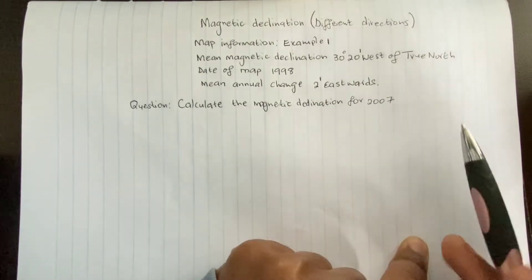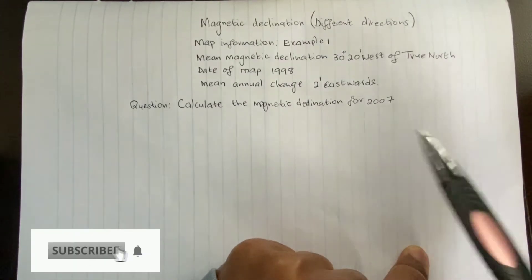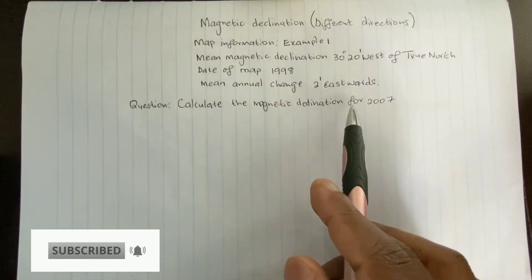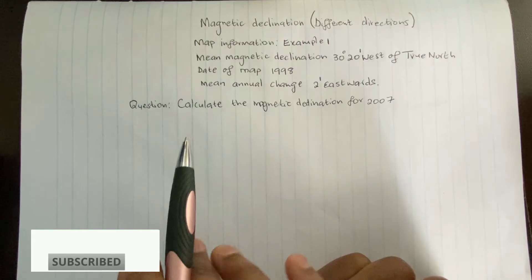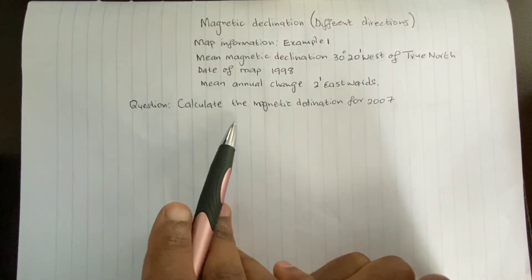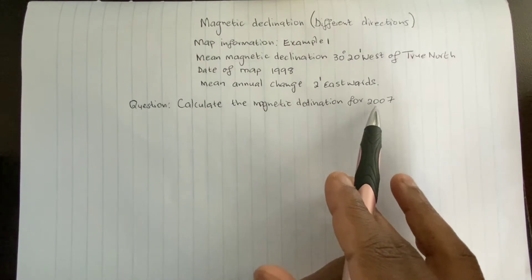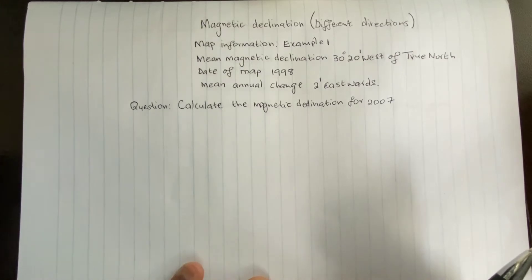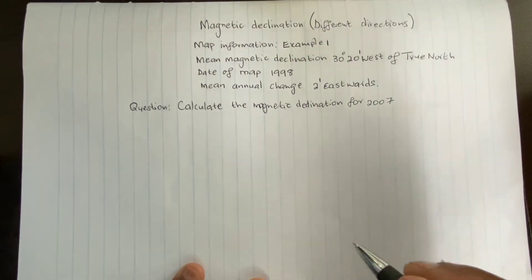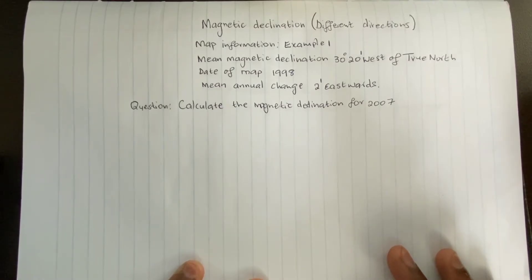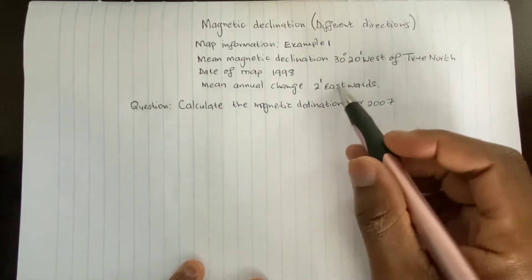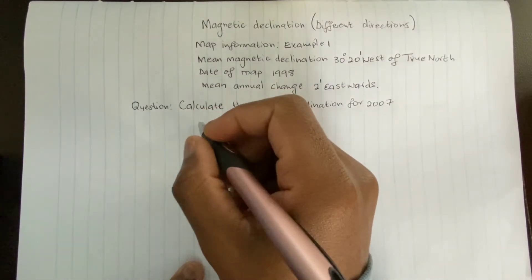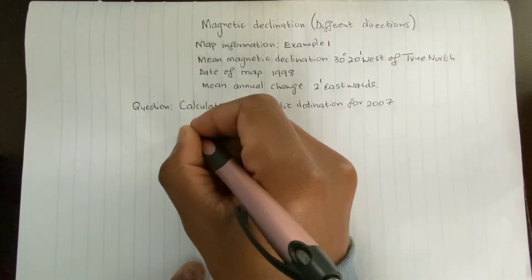Welcome to another video. Example one asks me to calculate the magnetic declination for the year 2007. This is straightforward — you follow the same steps as when you calculate magnetic declination for the same direction. The first step is to find your difference in years.